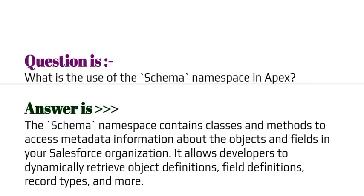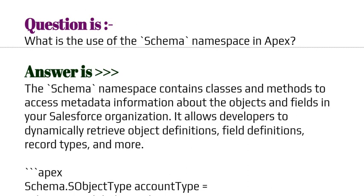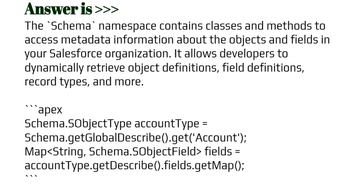Our next question is: what is the use of the schema namespace in Apex? The schema namespace contains classes and methods to access metadata information about the objects and fields in your Salesforce organization. It allows developers to dynamically retrieve object definitions, field definitions, record types and more. Please have a look at the given segment.